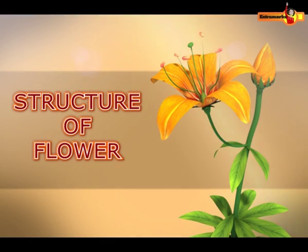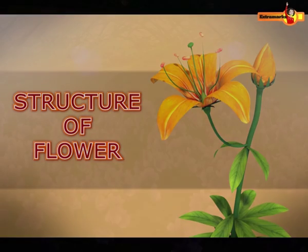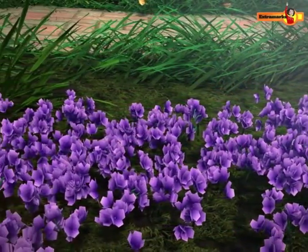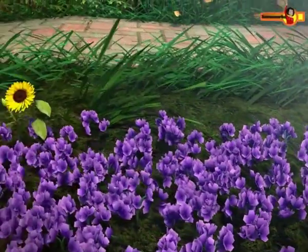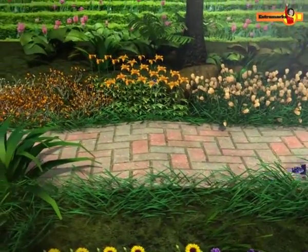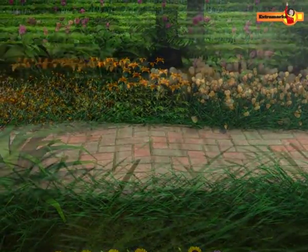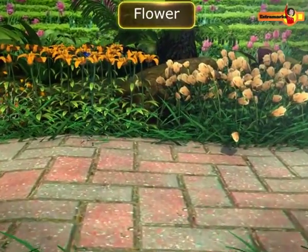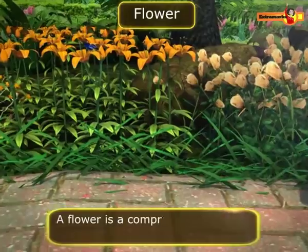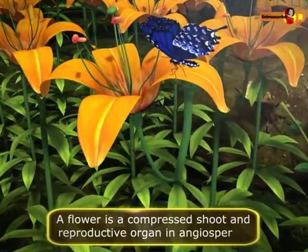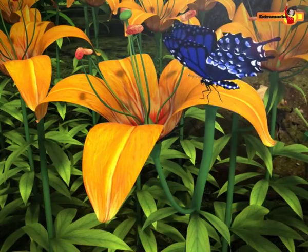Structure of flower. Flowers are one of the most beautiful creations on Mother Earth. According to biologists, morphologically the flower is a compressed shoot and reproductive organ in angiosperms, the flowering plants.